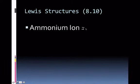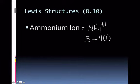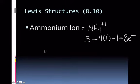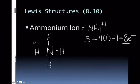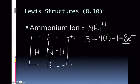Ammonium is NH₄⁺. Nitrogen has 5 valence electrons, 4 hydrogens each have 1, and because this is a plus 1 charge, subtract 1 from the total: 5 + 4 − 1 = 8. Nitrogen goes in the middle with hydrogens all around. Be careful — hydrogens do not get lone pairs; they're happy with just 2 electrons from a single bond. With 4 single bonds that's 8 electrons, exactly what we calculated. Square bracket it because it's an ion.